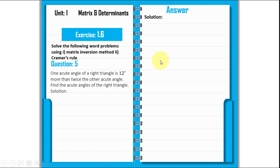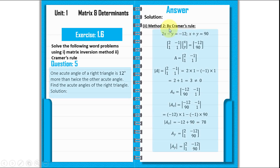Now we solve using Cramer's rule. From our two equations: 2X minus Y equals minus 12, and X plus Y equals 90. We form the coefficient matrix A with entries 2, minus 1, 1, 1. The determinant of A equals 2 times 1 minus minus 1 times 1, which gives 2 plus 1 equals 3.